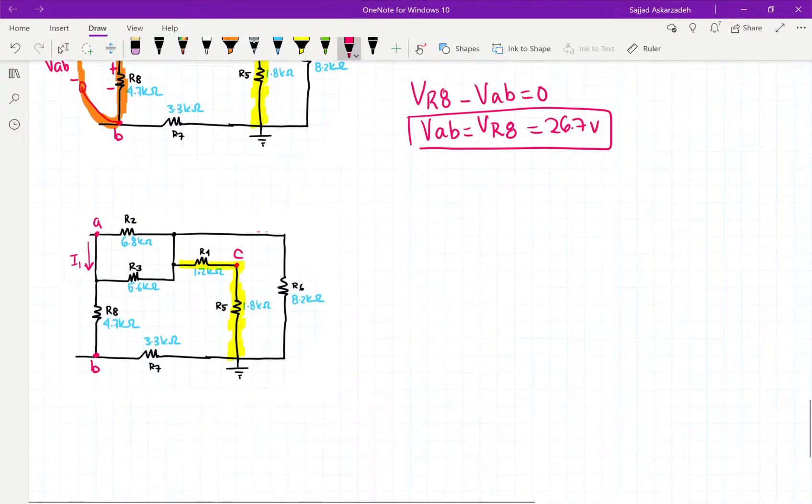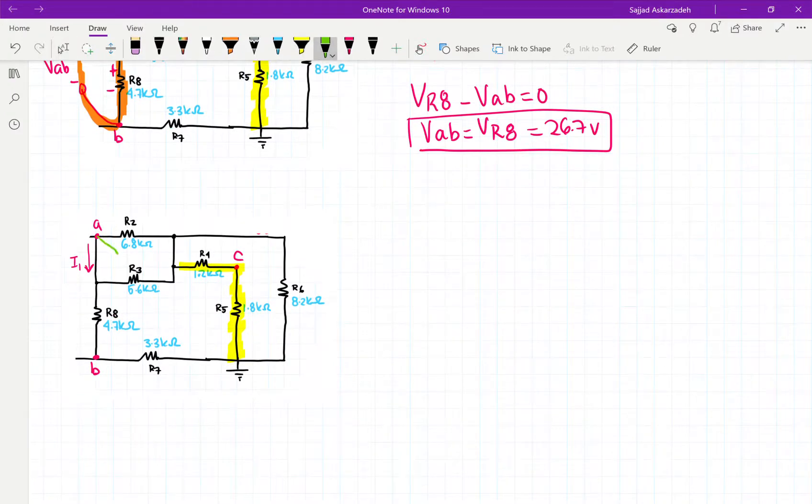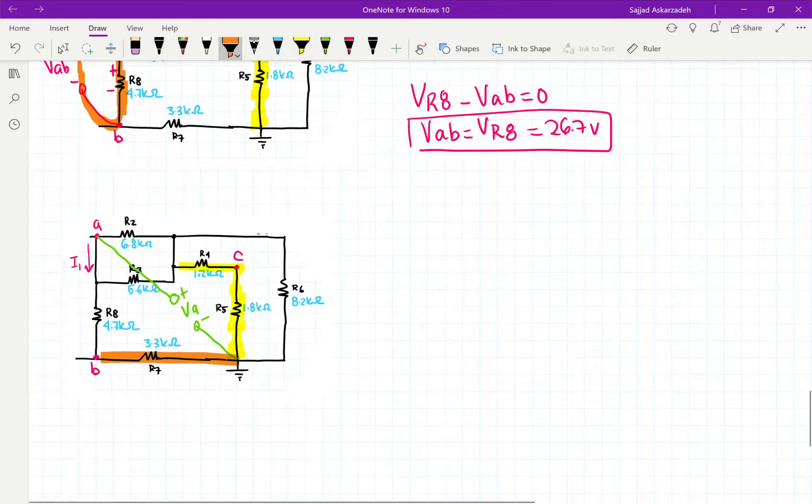So now we're going to go ahead and find VA. So VA is the voltage of A with respect to this ground point right here. So this is plus, this is minus, and this is VA. And we're going to look at this loop.